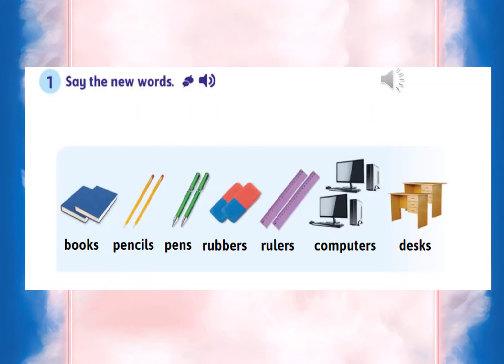Now we come to the third lesson — 'Let's play.' These are the new words. I'm going to play the CD player and you are required to repeat after it. Module one, let's play, lesson one — say the new words: books, pencils, pens, rubbers, rulers, computers, desks.